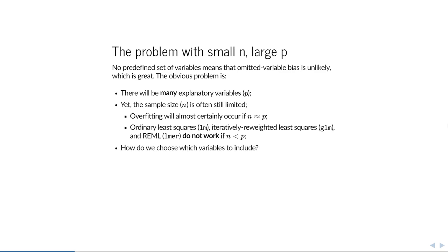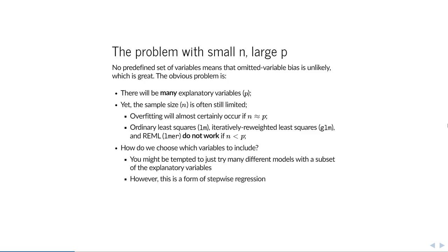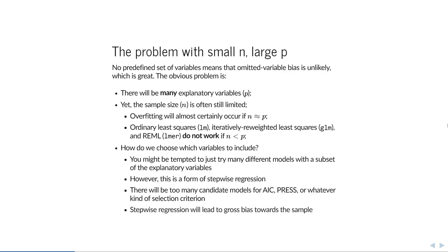So how do you choose which variables to include? In the model selection lecture we assumed sample size was larger than the number of parameters — but what if it isn't? You might be tempted to try many different models with different subsets of explanatory variables, but this is a really bad idea. It's called stepwise regression. There will be too many candidate models, and you'll almost certainly find a model that performs well in the sample but not in the population.